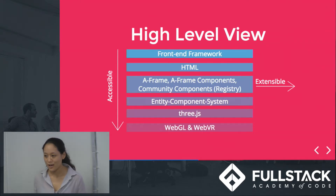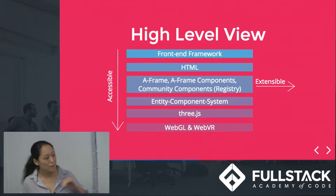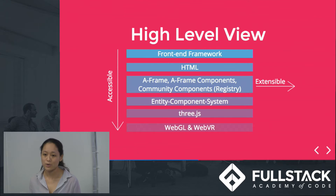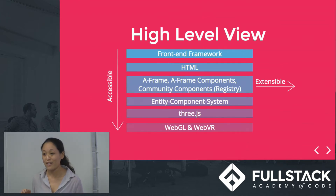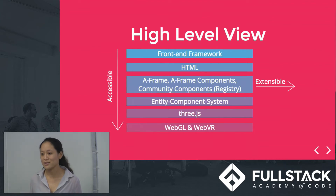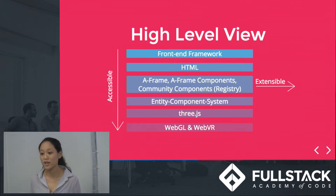Looking at a more high-level view, what's happening in your browser — your tech stack. At the bottom you see WebGL and WebVR, which are JavaScript libraries. WebGL handles your 3D rendering; WebVR handles your support for different VR devices on your browser. Right on top of that is Three.js, which helps create and display 3D graphics using WebGL. On top of that is the ECS we talked about, and right on top of that is where we get A-Frame — its components and community components you can find on the registry. And on top of that, HTML and your framework like React. Through this whole tech stack, everything is accessible. A-Frame is extensible because you can create your own components for whatever behavior, appearance, or functionality you want for your object — you're not limited that way.